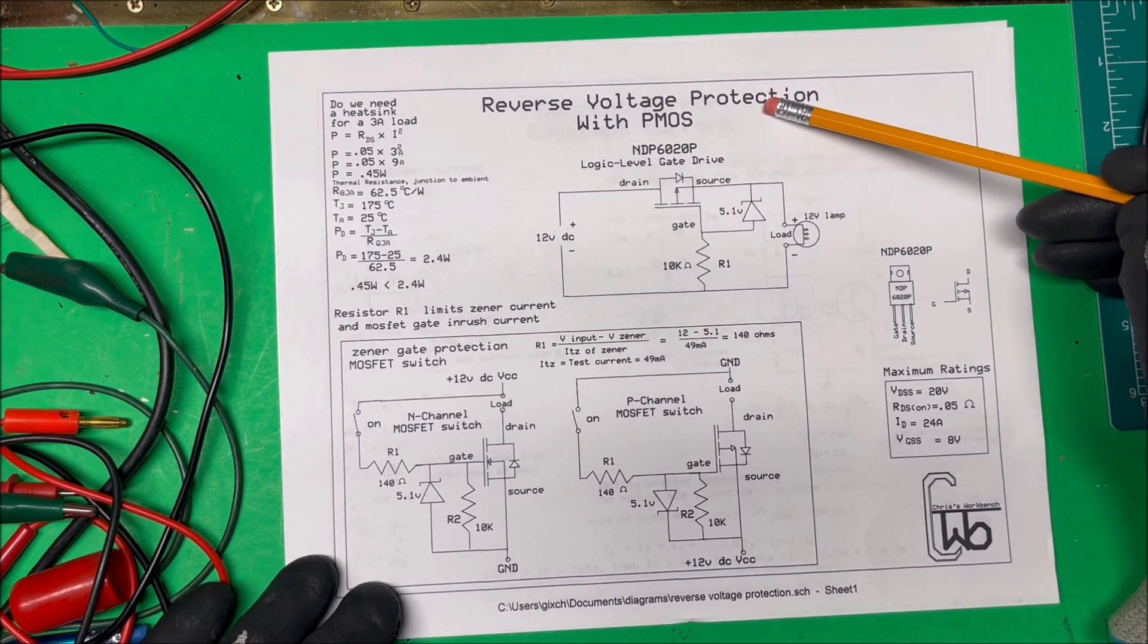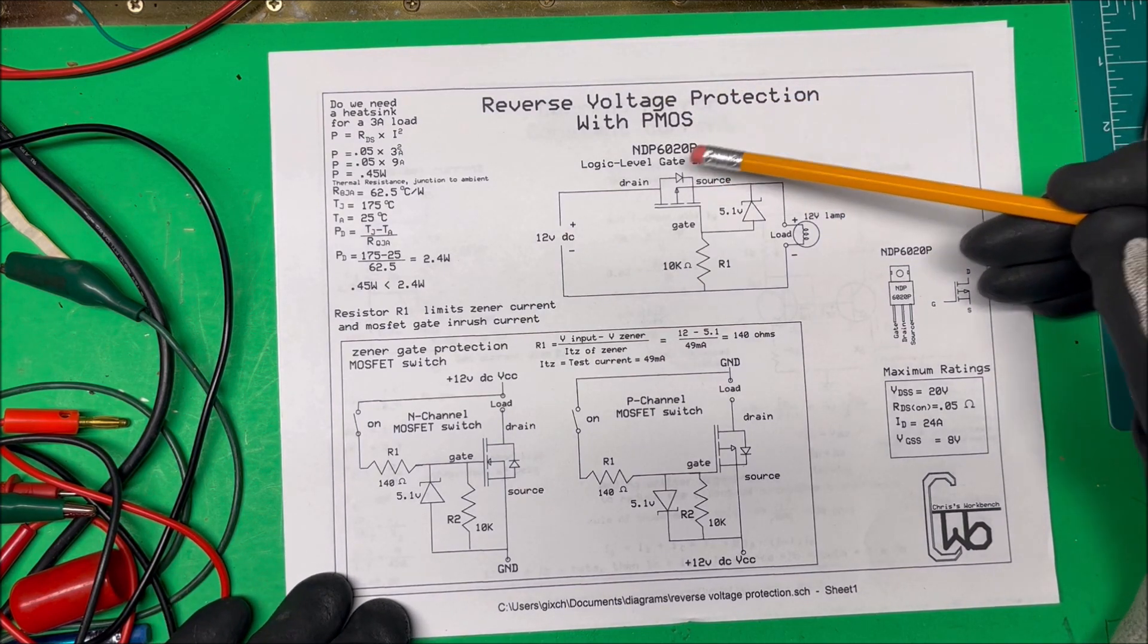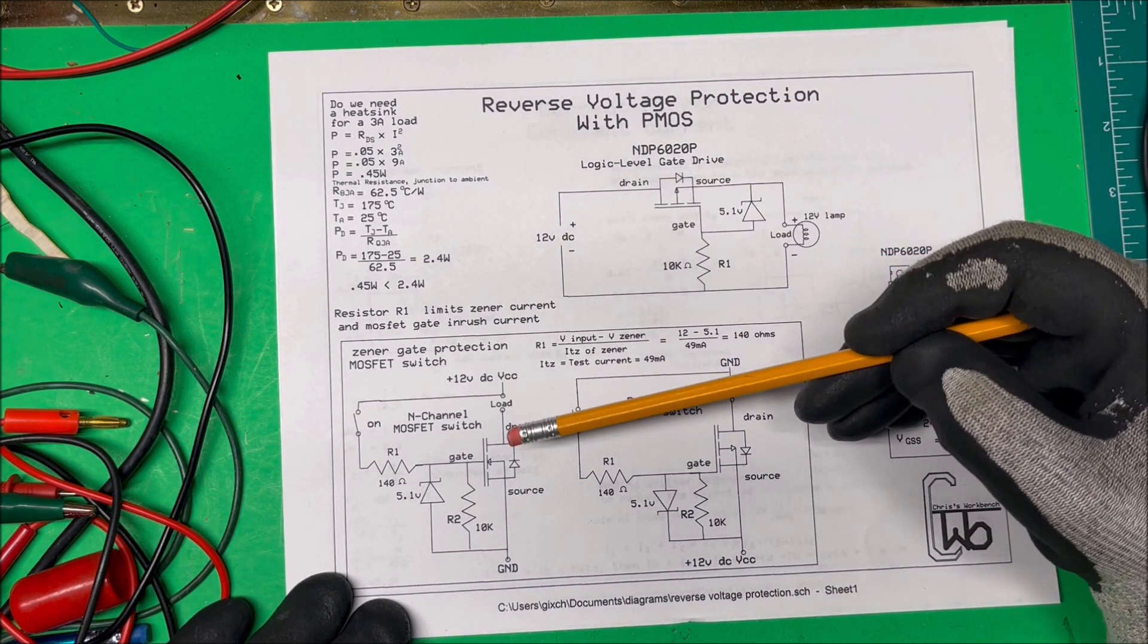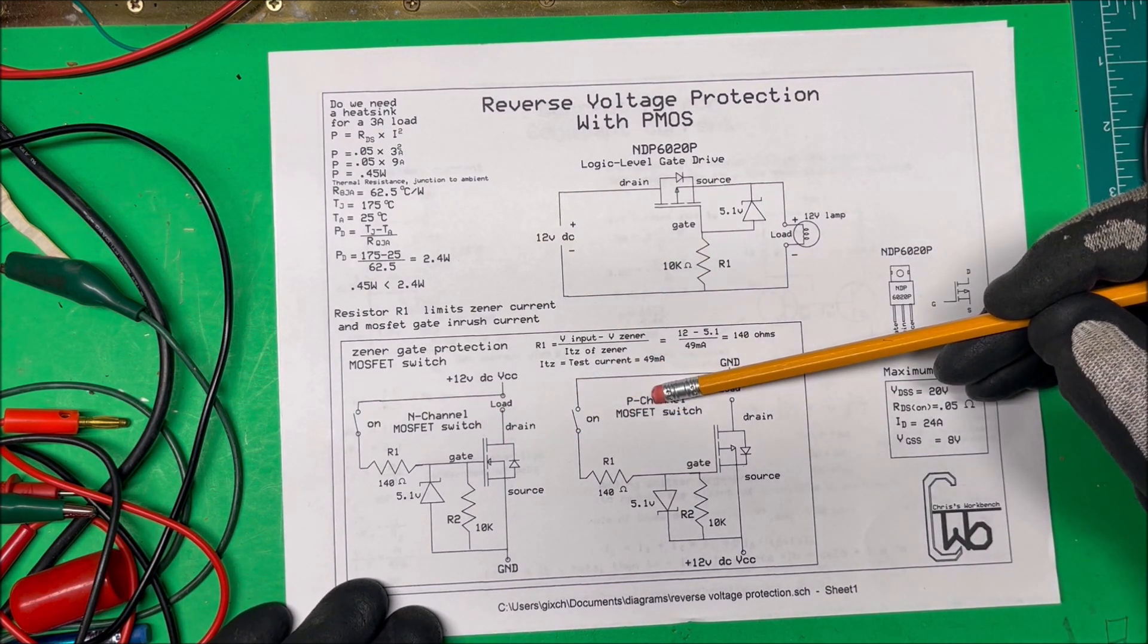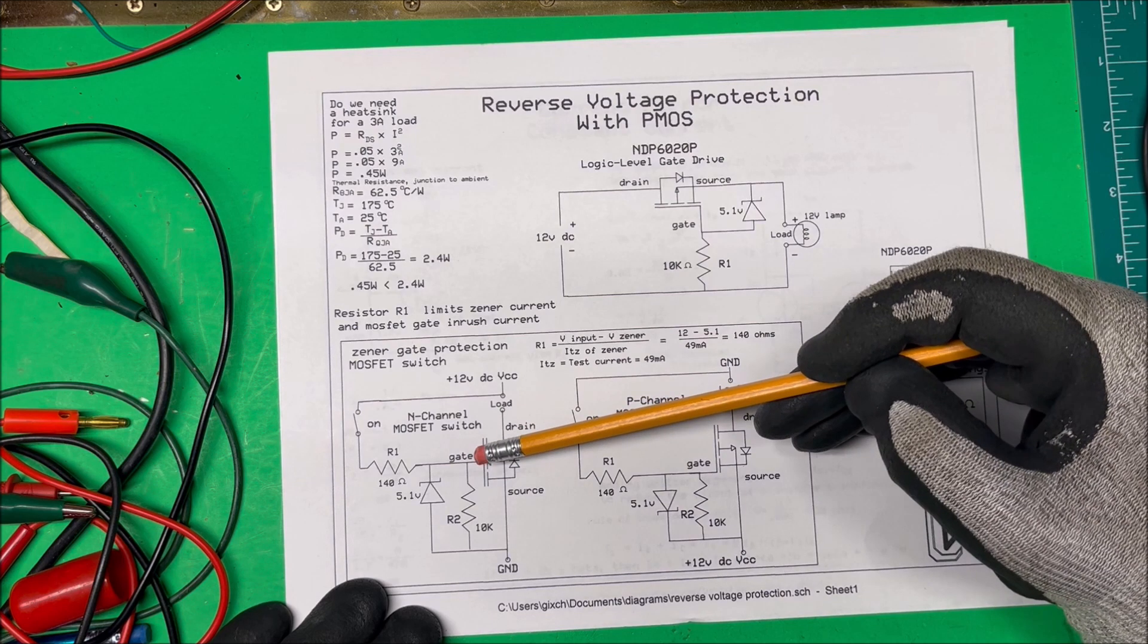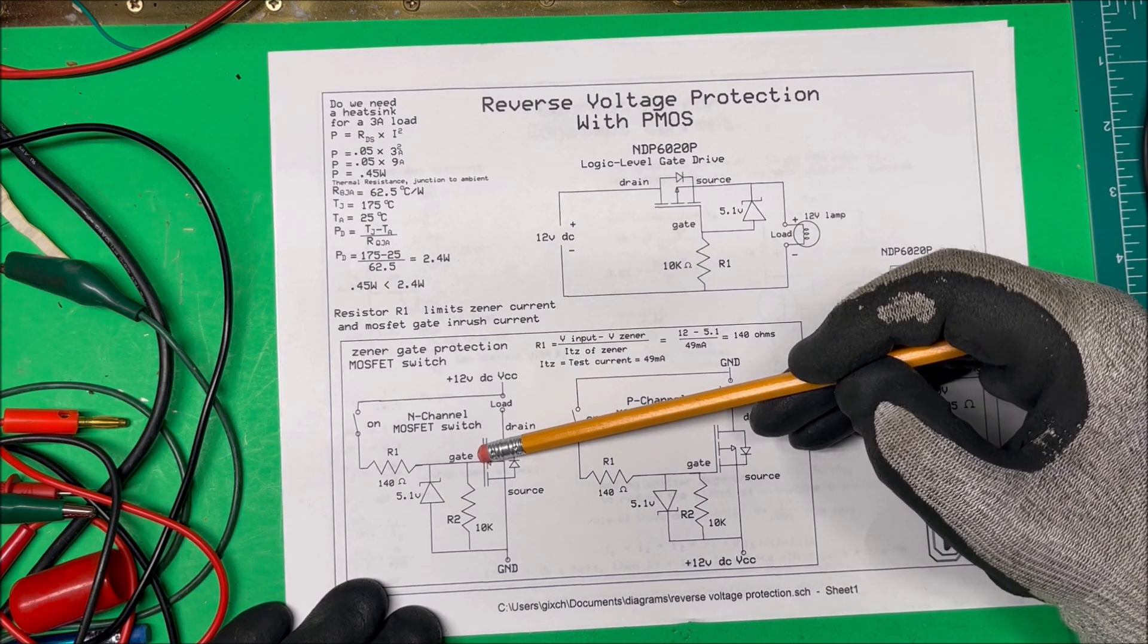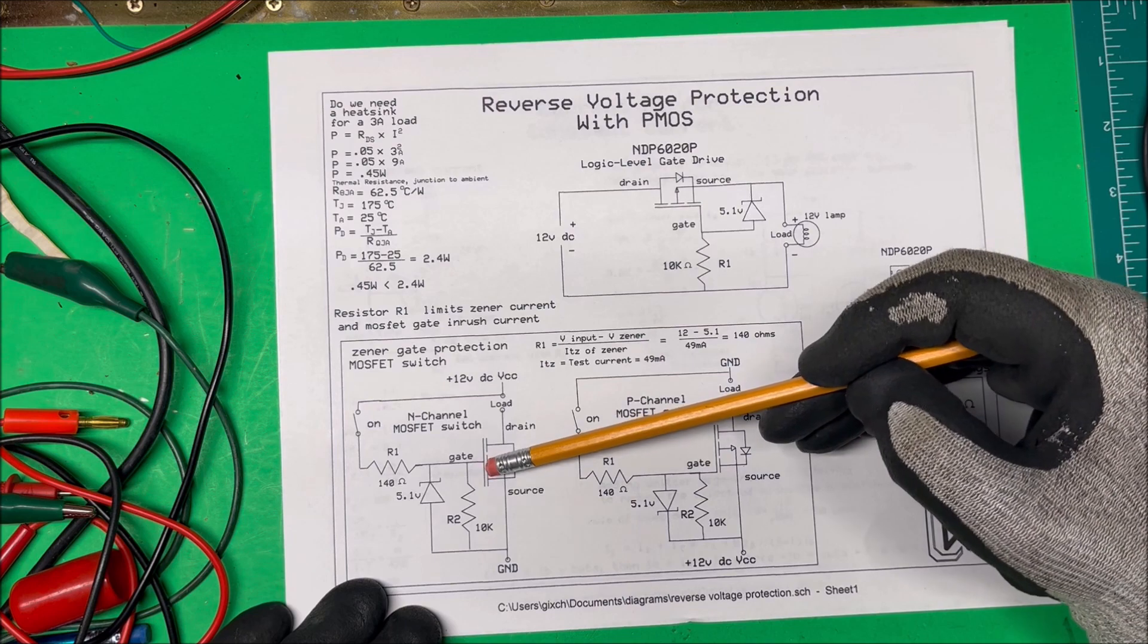Let's take a look at reverse voltage protection and we're going to use a P-channel MOSFET to do that. But first, we'll take a look at a MOSFET switch, an N-channel and a P-channel. Now the N-channel gate needs to have a positive voltage on the gate to turn on, and this happens to be a logic level chip.